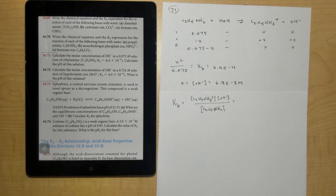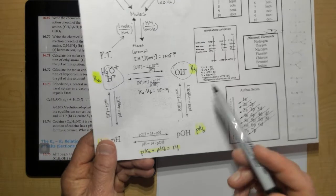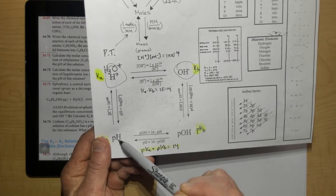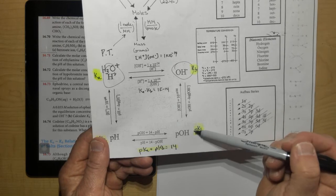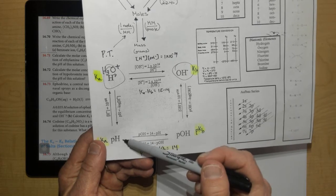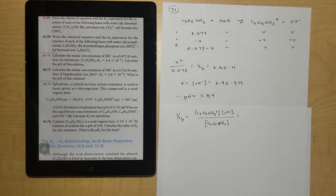Once you're there and you have the OH minus ion concentration, you'll want to find the POH and then the pH. So take the negative log of this number to get POH and then move from there by subtracting from 14 to get the pH. And after you do that, you get 11.84.